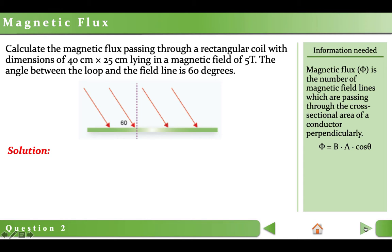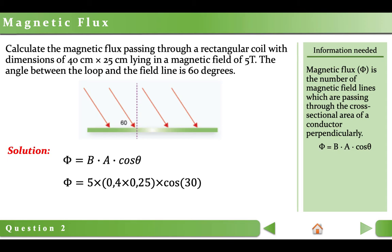In the previous question, magnetic field lines were perpendicular to the coil, thus parallel to the normal, so we used 0 as the angle. Now, magnetic field lines are at 60 degrees to the coil, meaning 30 degrees to the normal. Once we get the angle correctly, the rest is easy. After writing the formula, magnetic flux is equal to 5 times 0.4 times 0.25 times cosine 30, and the answer is 0.43 Webers.